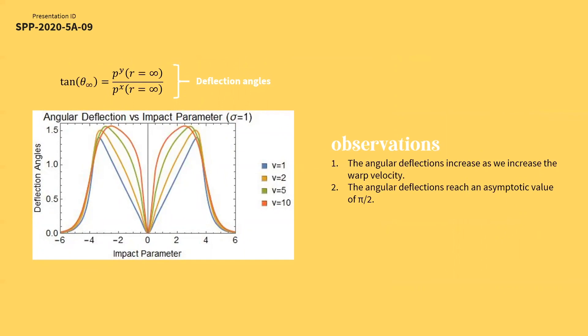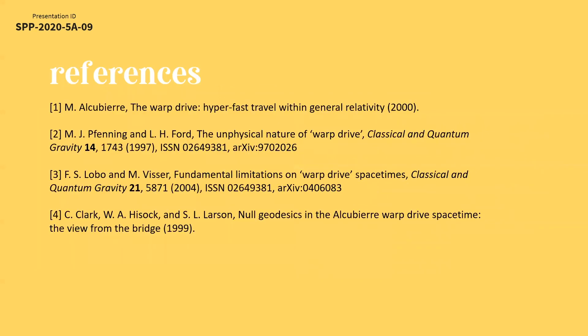Finally, we can solve for the deflection angles of the photons scattering and plot the resulting deflections with respect to the impact parameter for different warp speeds. The angular deflection increases as we increase the warp velocity, reaching an asymptotic value of π/2. Thank you for listening to my presentation. These are my references.